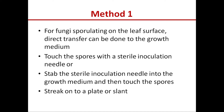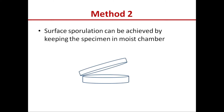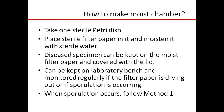The second method is for plant pathogenic fungi that do not sporulate readily on the leaf surface. Where sporulation is not found naturally, we can induce sporulation by keeping the diseased specimen in a moist chamber. To make a moist chamber, take one sterile Petri dish, place sterile filter paper in it, and moisten it with sterile water so the filter paper is only moistened without any free-flowing water. Then the diseased specimen can be kept on the moist filter paper and covered with a Petri dish lid.